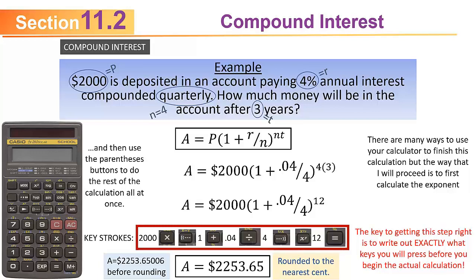If you put $2,000 in an account paying 4% annual interest compounded quarterly, at the end of three years you will have $2,253.65. The final step is always to check if the answer seems reasonable: you start with $2,000 and three years later have about $2,250. Nothing seems obviously wrong. If you got $20,000, you'd know something went wrong and you can go back and find your mistake.